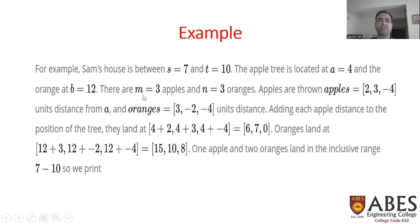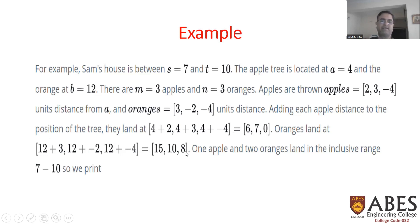For oranges, B is 12 and the distances are 3, minus 2, and minus 4. So 12 plus 3 equals 15; 12 plus minus 2 equals 10; 12 plus minus 4 equals 8. The orange landing positions are 15, 10, and 8. Positions 10 and 8 are within the range 7 to 10, so two oranges land on Sam's house. The answer is one apple and two oranges.